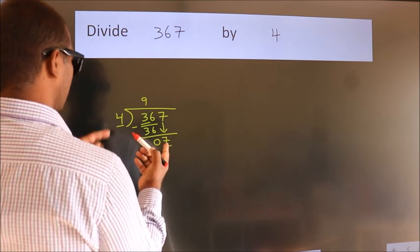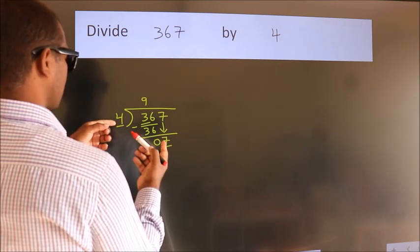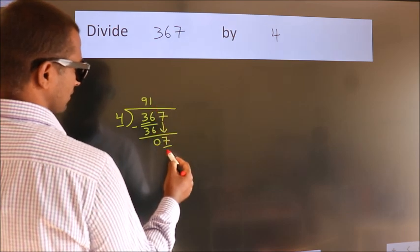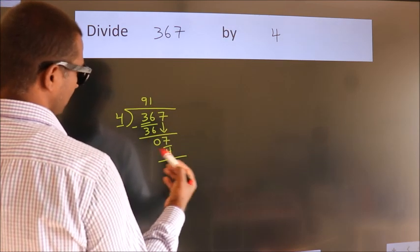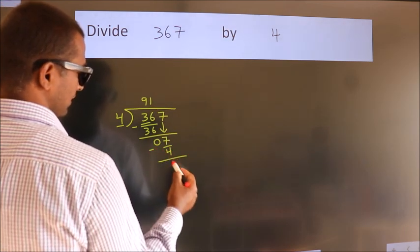A number close to 7 in the 4 table is 4 ones, 4. Now we subtract. We get 3.